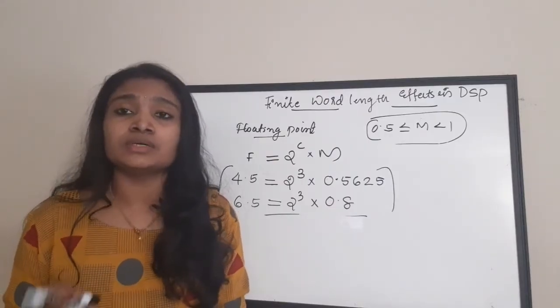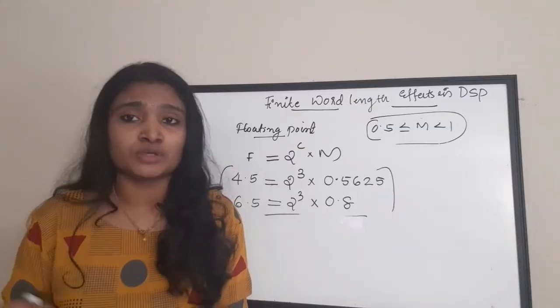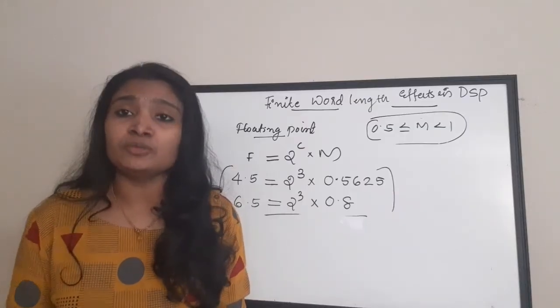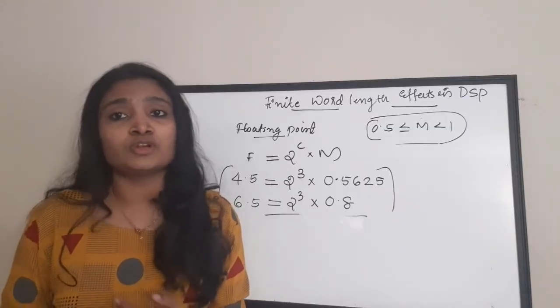In block floating point number representation, numbers are divided into various blocks and each block is assigned a common exponent term. So it is actually a combination of fixed point and floating point number representation. You mainly need to study about fixed point and floating point.